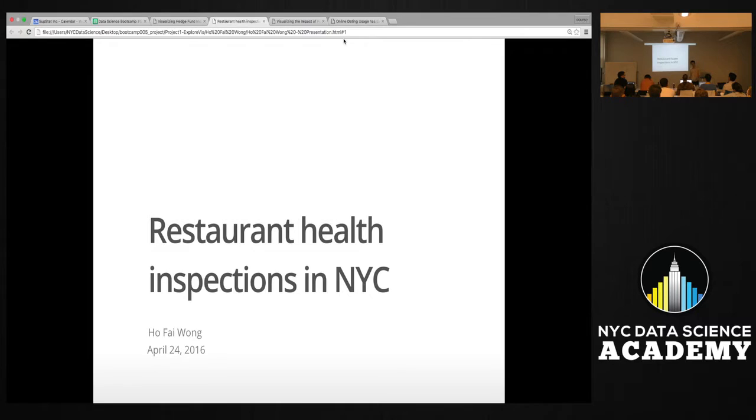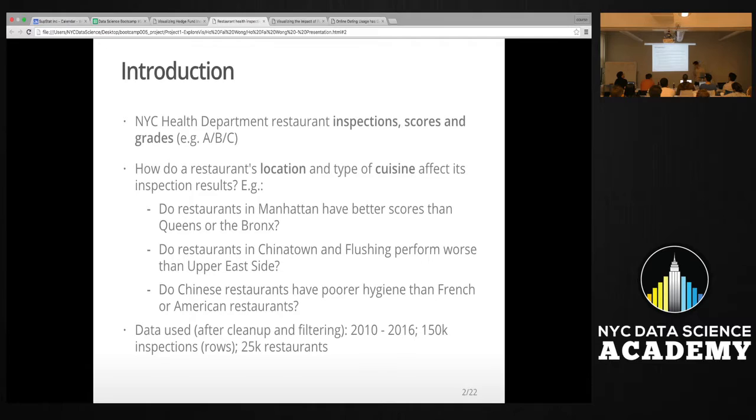Taking that forward, I wanted to see how I could take the data that New York City provides around restaurant health inspection results and try to define or extrapolate certain findings, regarding for example how does a restaurant's location affect its inspection results, or how does the restaurant's type of cuisine affect its inspection results. And being very selfish, I would probably use some of these findings for my restaurant selection.